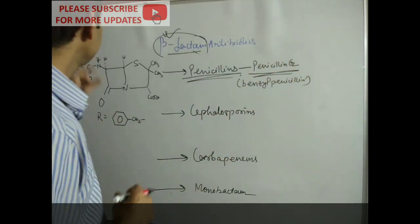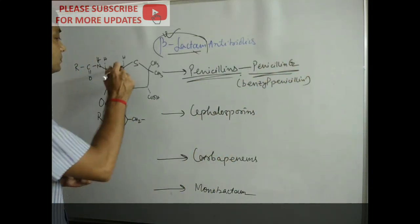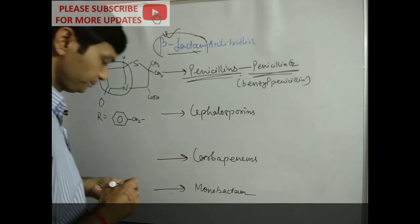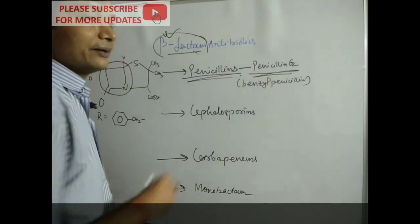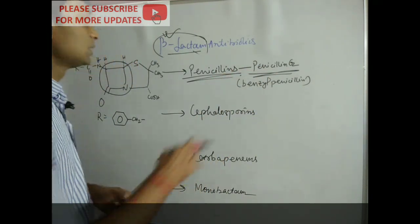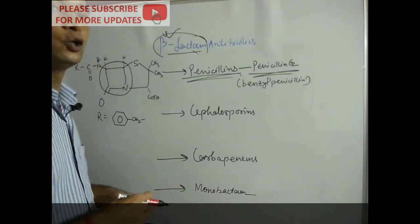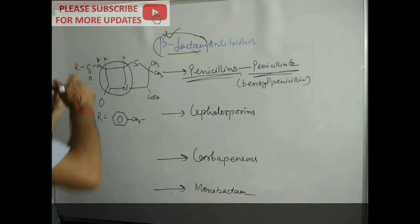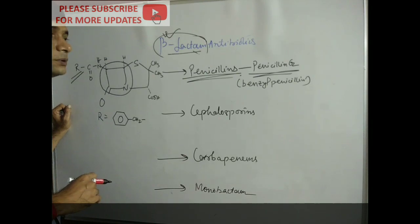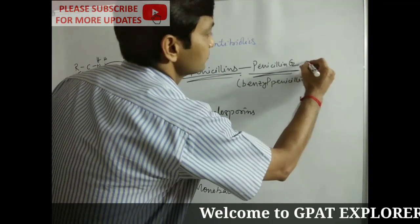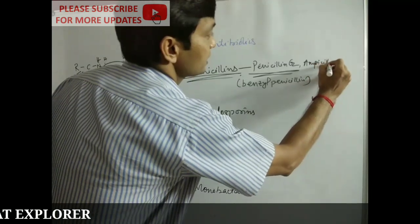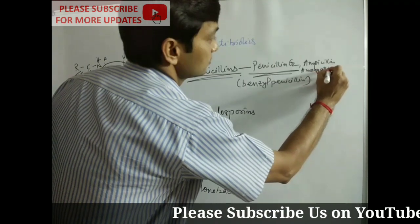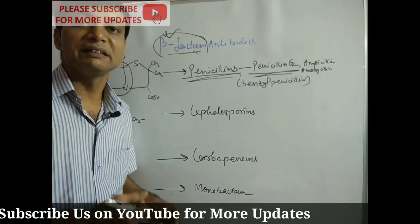In the case of penicillin G, this is the beta-lactam ring. There are many compounds discovered after penicillin G which are used as antibiotics by modifying this R group, such as ampicillin, amoxicillin, bicampicillin, carbenicillin, ticarcillin, etc.